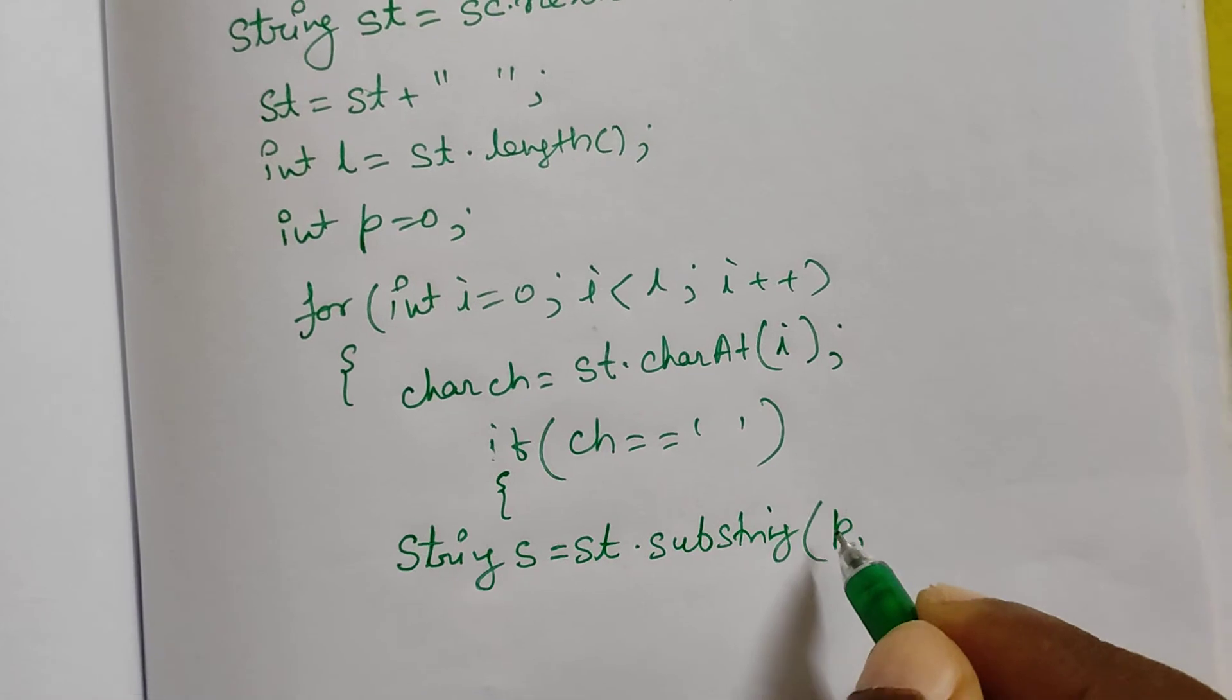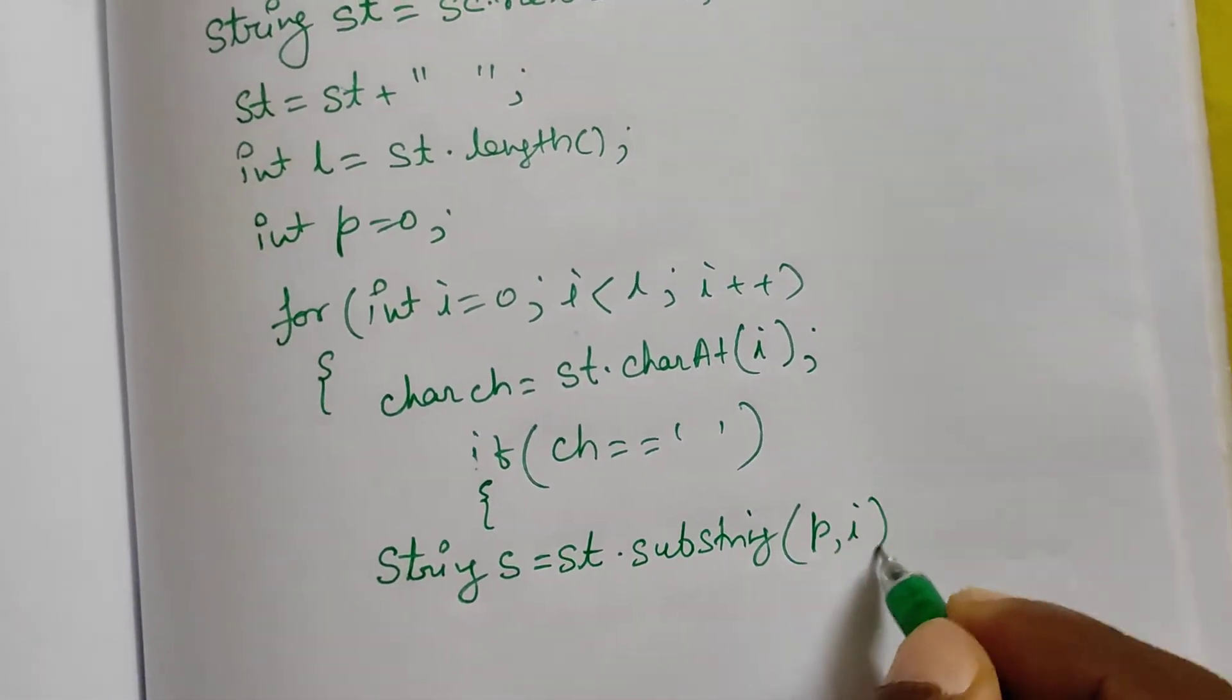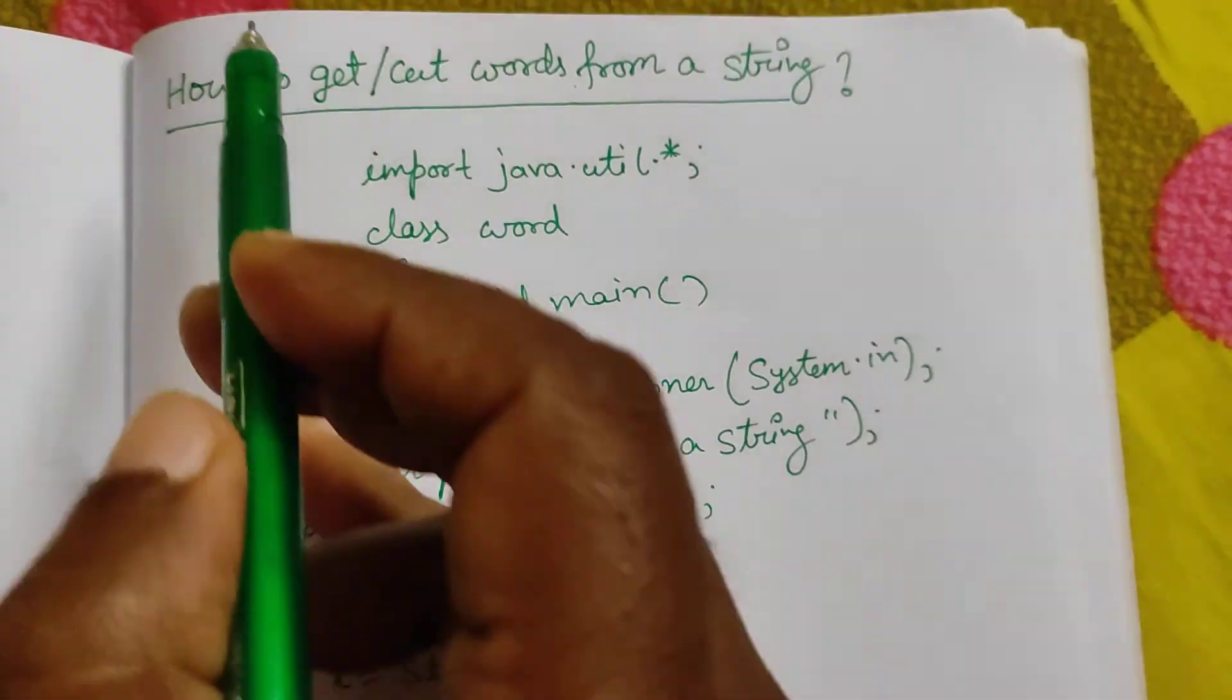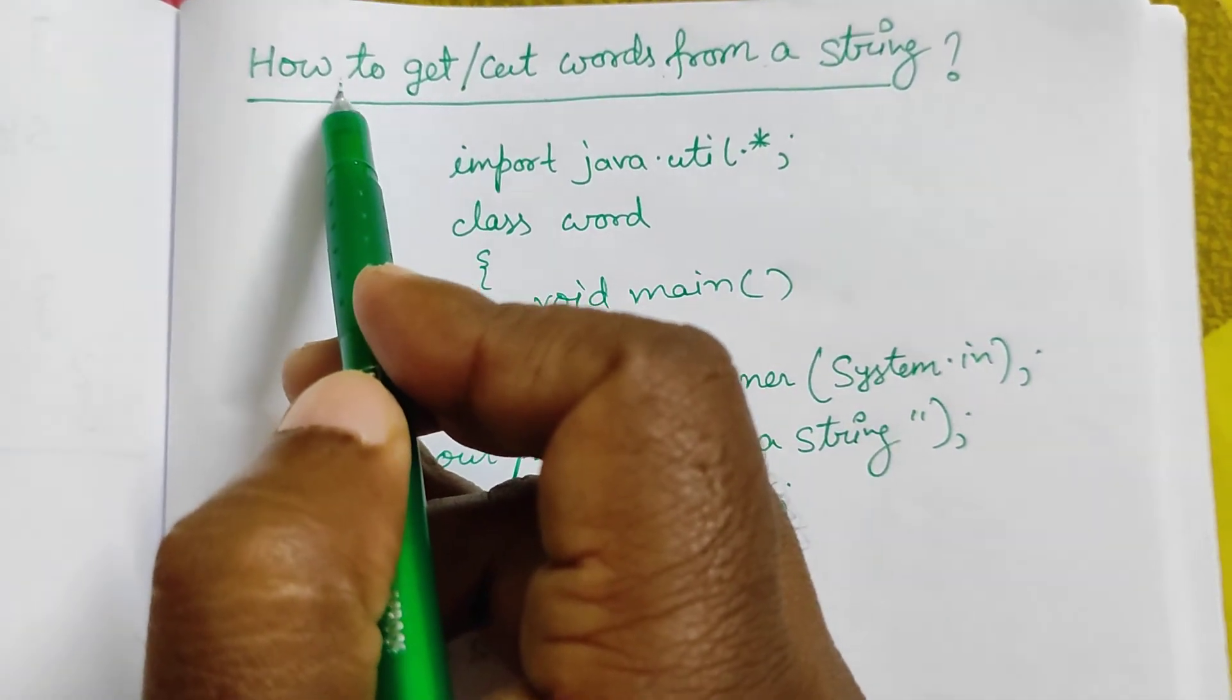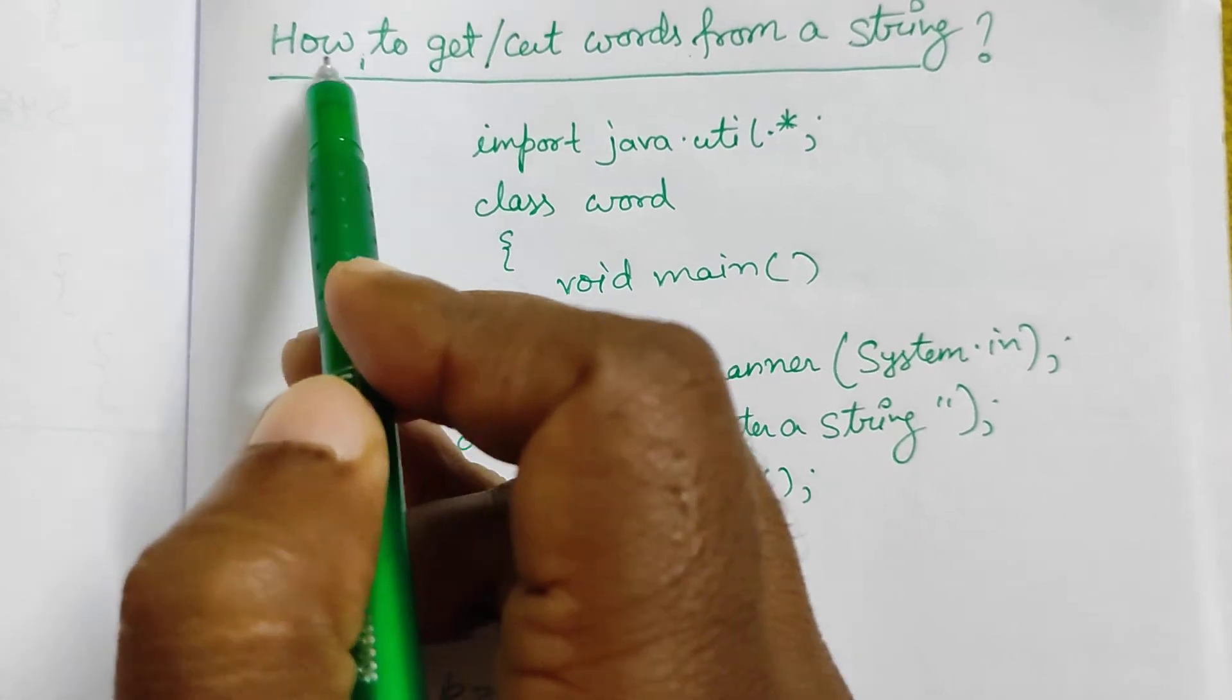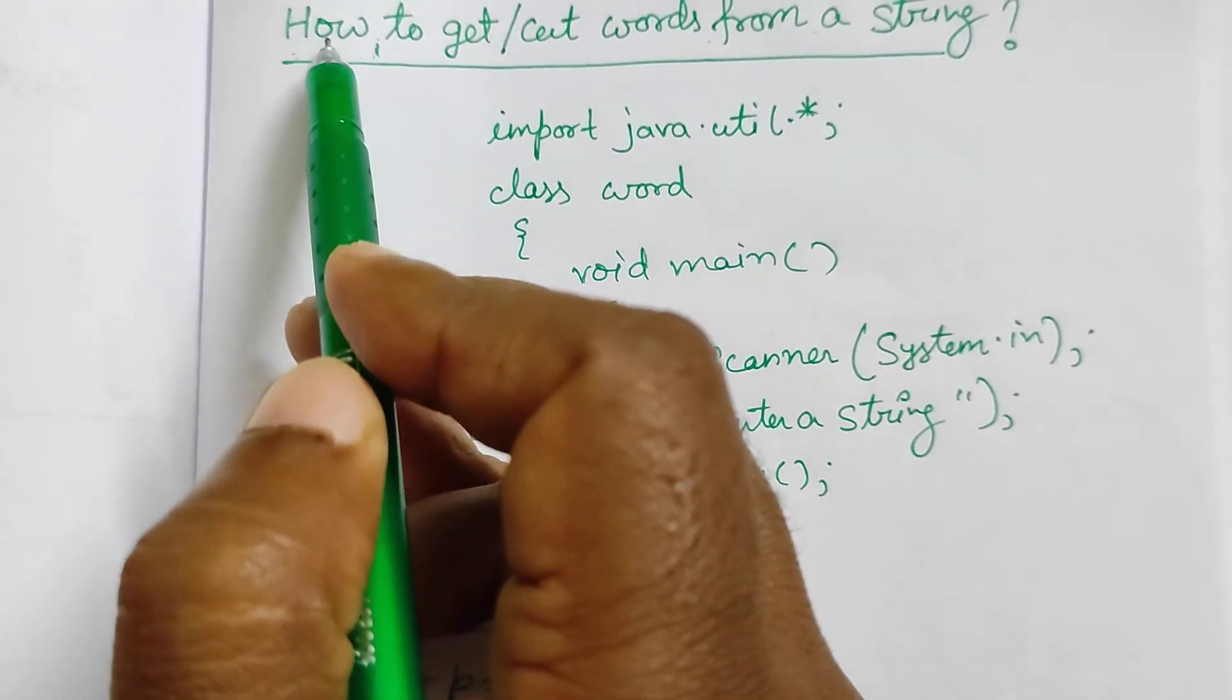Then p - p is the first index position, you see here, p is zero. And i - i is the position where space is present. That means if it is our string, so this one is i. So our starting position is zero and ending position is i. That means it will cut 0, 1, 2. This is 3, so up to 2.